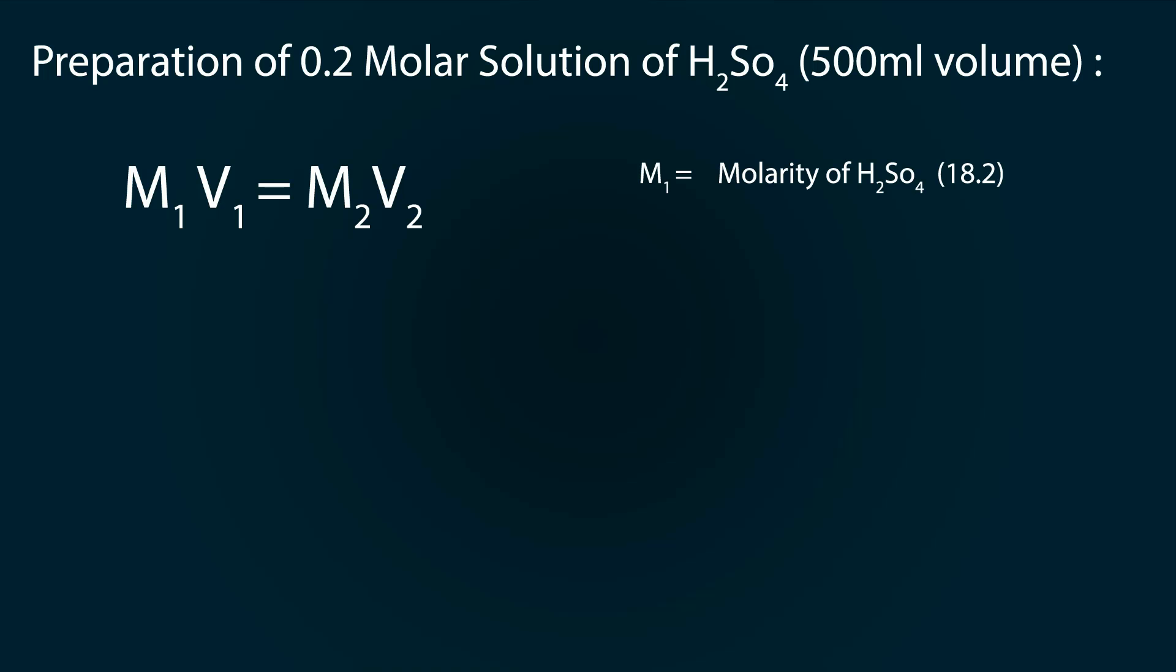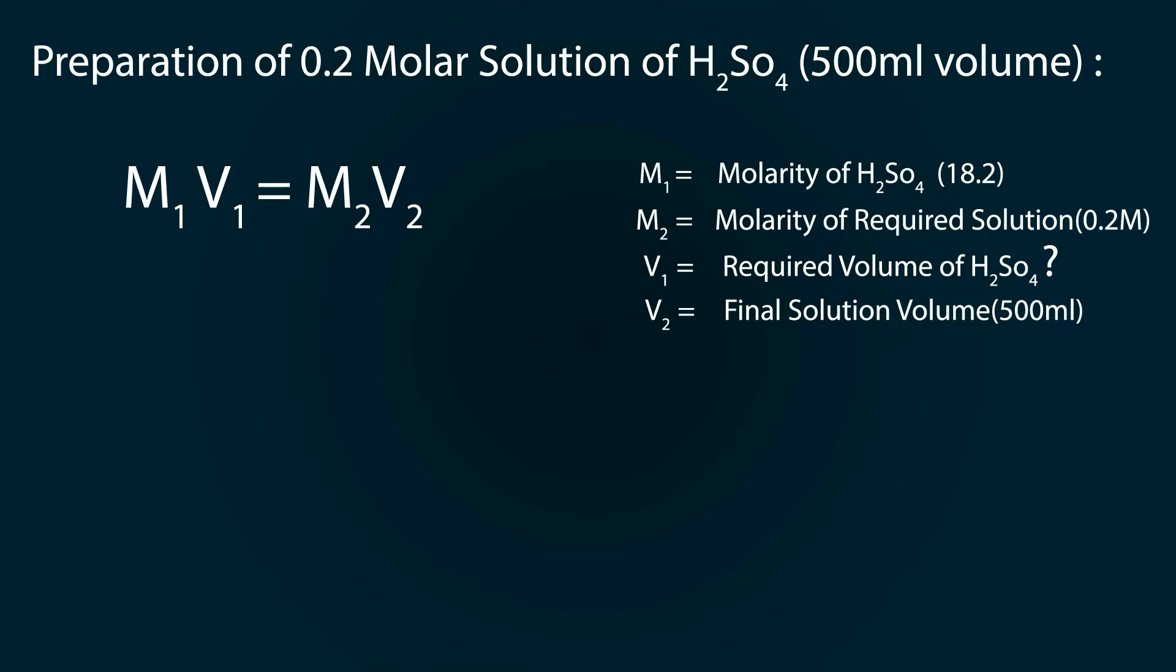Where M₁ is the molarity of H₂SO₄ which is 18.2, M₂ is the molarity of our required solution which is 0.2 molar, V₁ is the required volume of H₂SO₄, and V₂ is the final solution volume which is 500 milliliter.